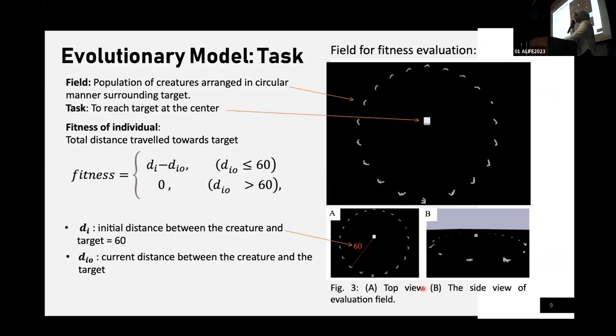By using a simple locomotion task, we conduct experiments to see how our method can affect the evolution of creatures in this environment. Creatures were arranged in a circular manner, surrounding the target cube at the center. And the fitness is the total distance traveled by the creatures.